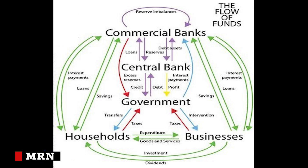Let me give you the general idea. MMT says that it is possible to continually print money without consequences if the issuer of the currency is controlled by the state itself. This is predominantly the case of the US, UK, Japan, or Australia. Their argument is that the money is only ever owed to themselves. So, what would they do? Default on themselves?